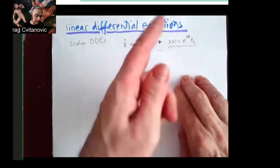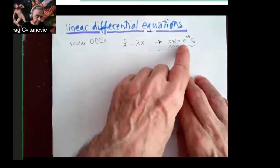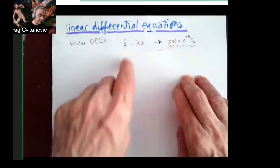Which you easily check by taking first derivative, you bring lambda there, and this product means that you evaluate this at time T.